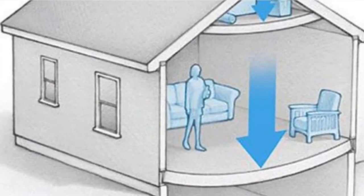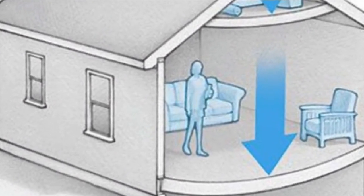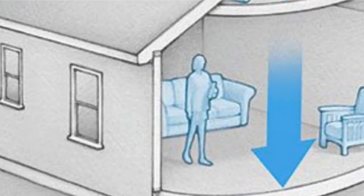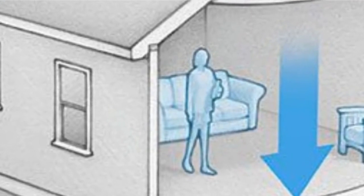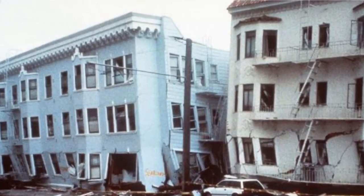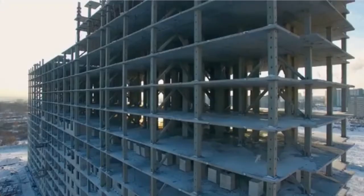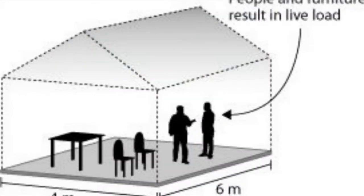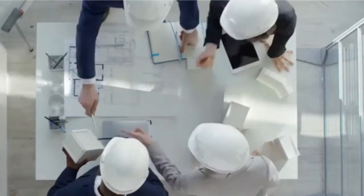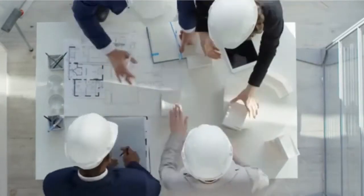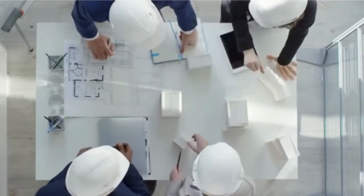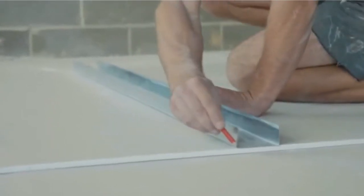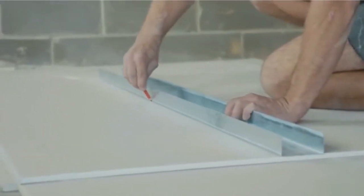Dead load consists of the weight of the structural members that make up the structure, in addition to all of the finishes that make the structure look nice and pretty. We call this dead load because they never change. As a structural engineer, we take into account all of the materials when figuring out the dead load of a structure. This load could include insulation, drywalls, wood stud, flooring, brick veneer, etc.